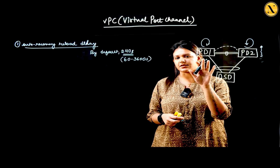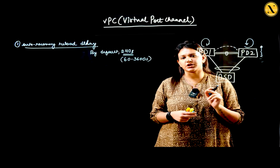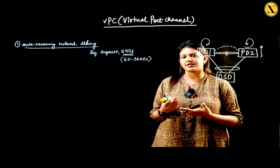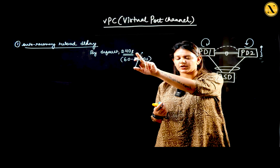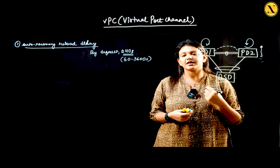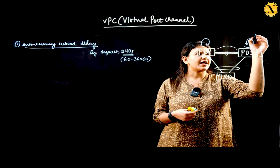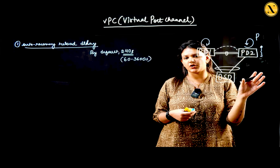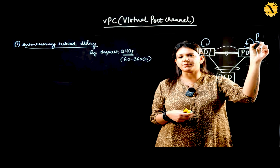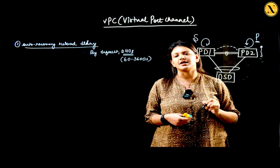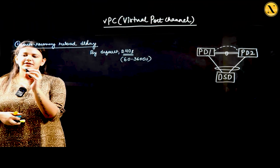The device that came up first waits for the other device to come up as well. If the other device does come up within the timer expiration, there is an election process between them as to who should be elected as primary and secondary. But if the other device does not come up even at the end of 240 seconds, whichever device came up first will elect itself as primary, irrespective of its role priority. When the other device eventually comes up, it takes over the role as secondary. This is what auto recovery reload delay does.